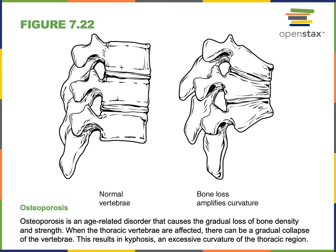We can see the example of the effects of osteoporosis on the thoracic vertebrae, where there is normally a curvature to the vertebral column in the thoracic region to help support the weight of the upper body. That weight can lead to compression of the vertebral column and exaggerate the curvature of the thoracic region, a condition known as kyphosis or hunchback, which is more common in individuals with osteoporosis.